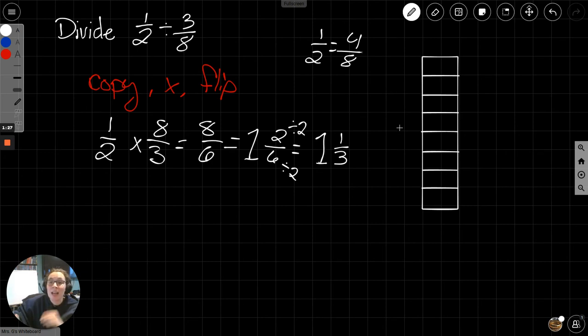If I'm not using a model, I do not need a common denominator. If all I'm doing is copy x flip without checking my work with a model, I don't need a common denominator.